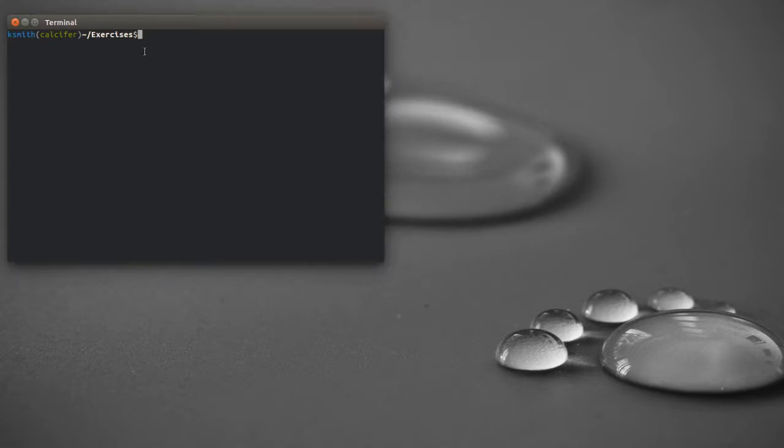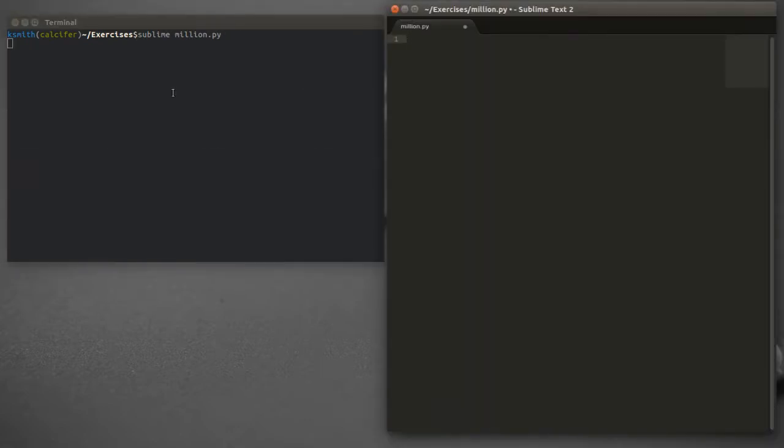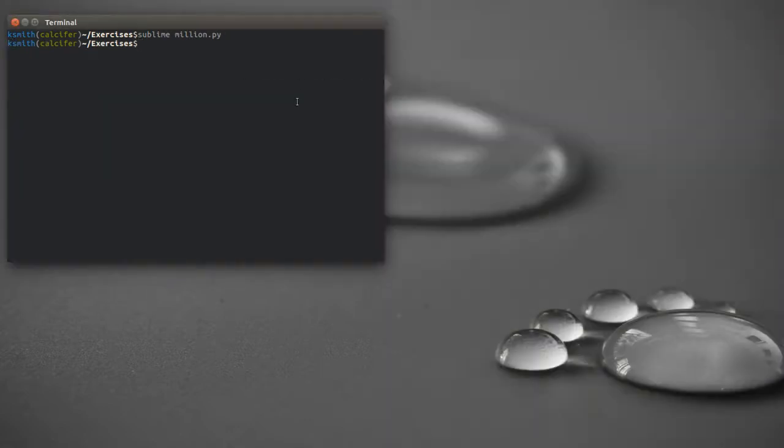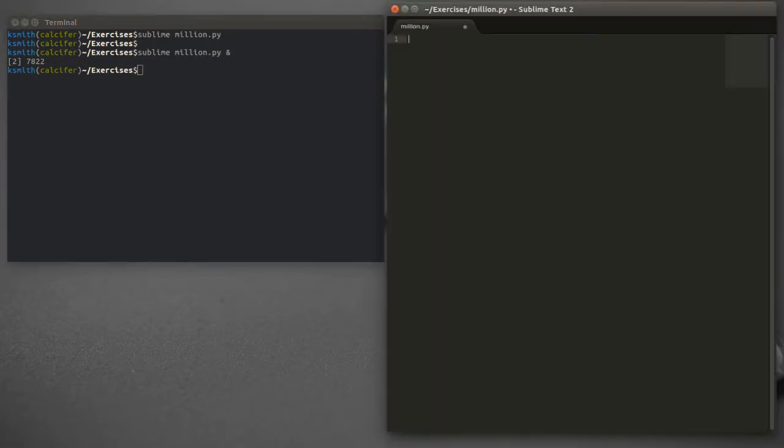So we can begin by using the shell to open a text editor where we can type our program. So we'll use the text editor sublime, and we'll call our program million.py. So we'll start with our Python program. I forgot, when you start the sublime editor, you can put an ampersand after the command line, and this will allow you to interact with the shell afterwards.